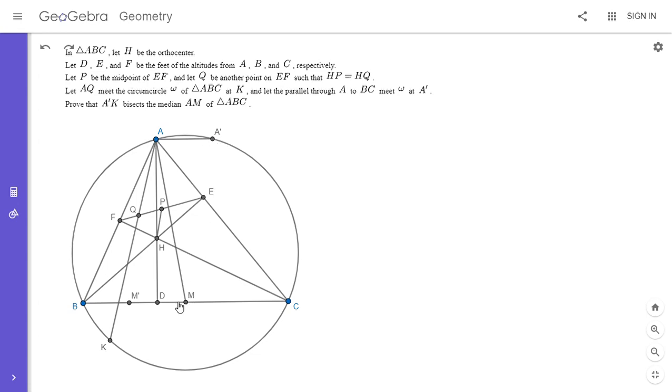And then if we can show that A, A', M, M' is a parallelogram, which I'll do in just a second, then we know that A'M' bisects AM.